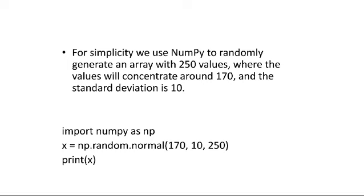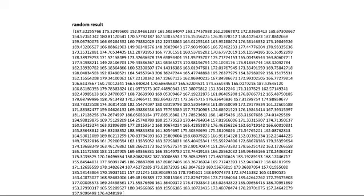For simplicity we use numpy to randomly generate an array with 250 values where the value is centered around 170 and the standard deviation is 10. Here we are just going to generate values. This is the 250 random values we have generated. We are now going to plot these values in the histogram.